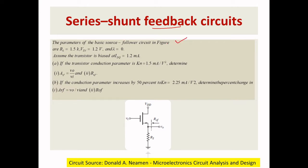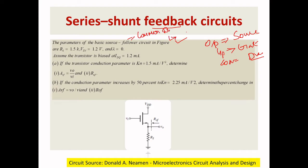The given problem statement is a basic source follower circuit. In a source follower circuit, the output is taken from the source, the input is given at the gate, and the common terminal is the drain. Another name for the source follower circuit is a common drain configuration. An important property is that the voltage gain is almost unity.